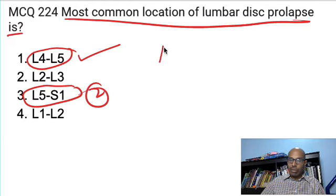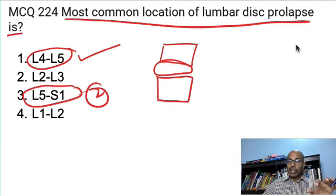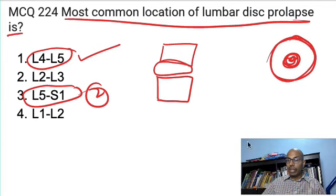What is a disc prolapse? We all know there are multiple vertebrae. Between the vertebrae, there is a cushion-like structure which is called the disc. The disc has two portions. When you take an axial cut of the disc, the central portion is called nucleus pulposus and the outer portion is called annulus fibrosis.